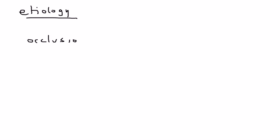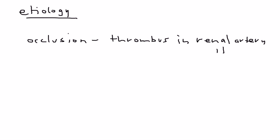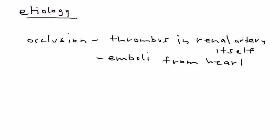Now let's talk about the cause — what is the reason each of these will happen? Occlusion of the renal artery can happen either because of a thrombus, which is a blood clot that can arise in the renal artery itself, or because of an emboli — a blood clot that moves from its origin, which is oftentimes the heart, and then goes to the renal artery and causes a complete blockage.